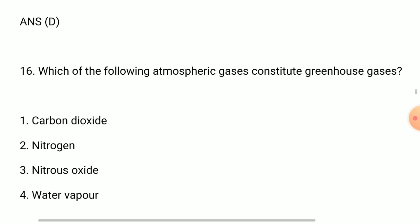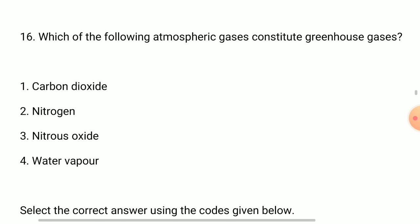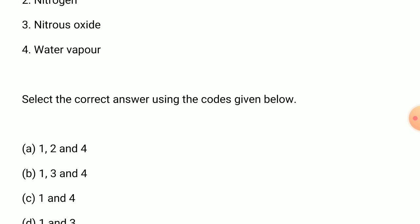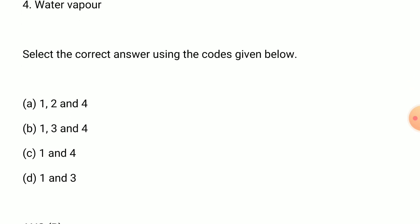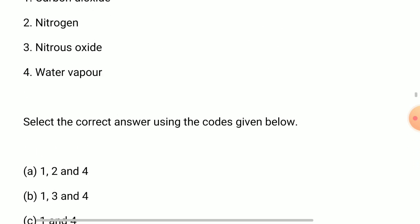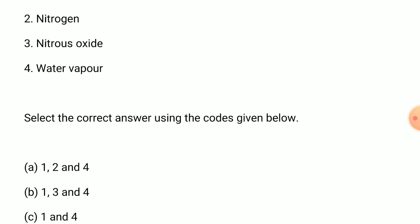Question 16: which one of the following atmospheric gases constitutes greenhouse gases? Select the correct answer using the codes given below. Answer is B, 1, 3 and 4: carbon dioxide, nitrous oxide, and water vapor.